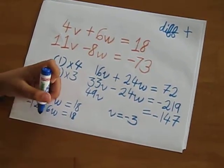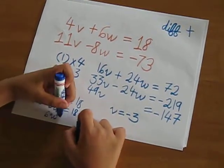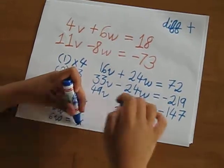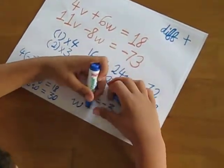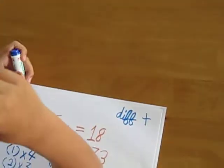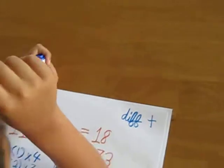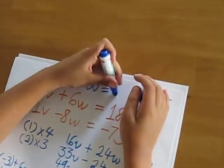Subtracting minus 12 from both sides, 6w equals 30. Dividing by 6, w equals 5.